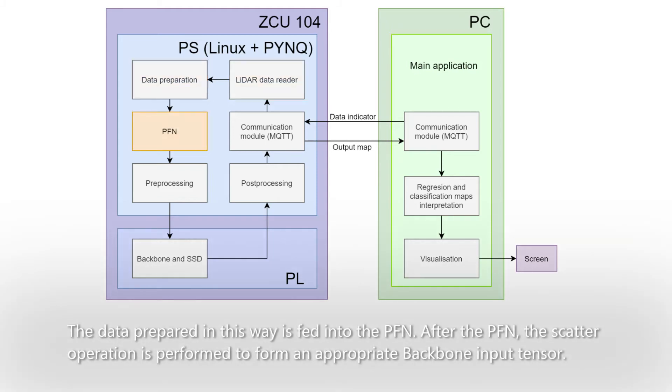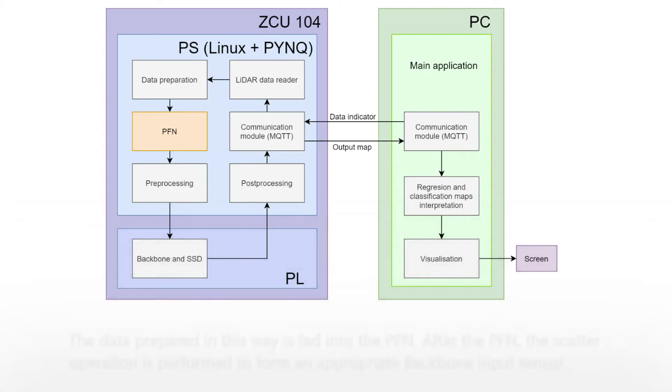The data prepared in this way is fed into the PFN. After the PFN, the scatter operation is performed to form an appropriate backbone input tensor.